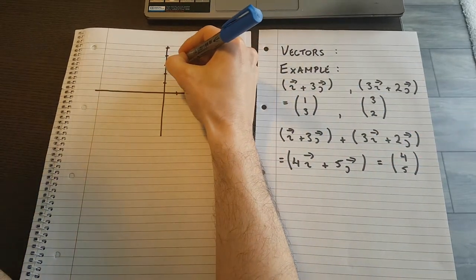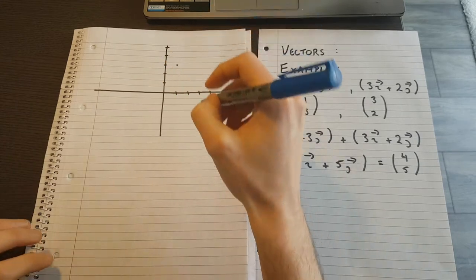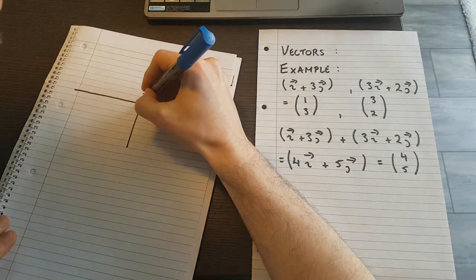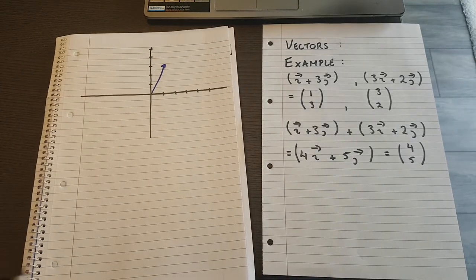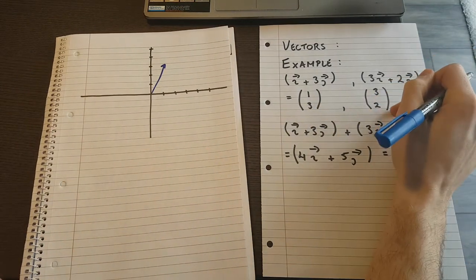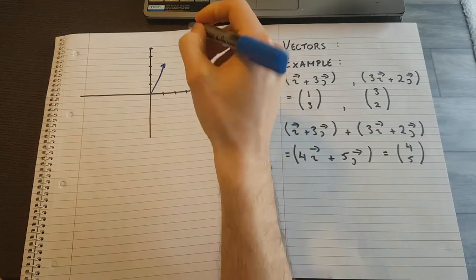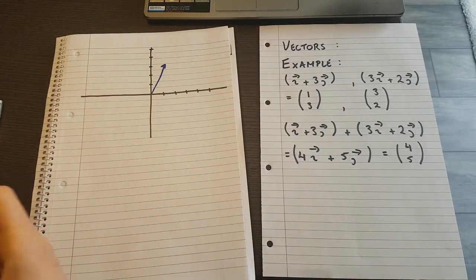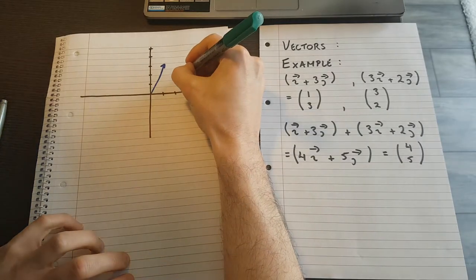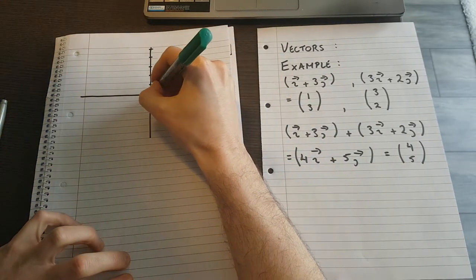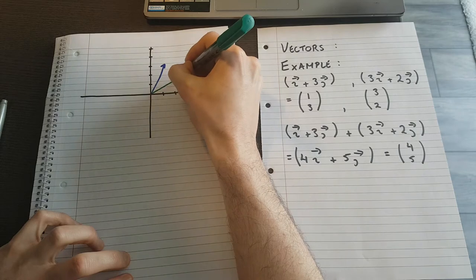So that makes it right about here. Now again, I'm drawing these freehand, they're not perfect. But should be good enough to explain the point. Then I have 3, 2, so 3 in the x direction, and 2 in the y direction. That's about here. I'll join those up.